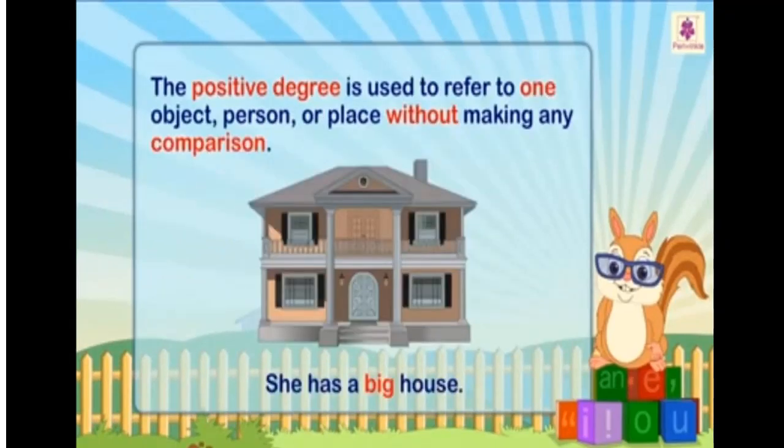The positive degree is used to refer to one object, person, or place without making any comparison. For example, she has a big house.